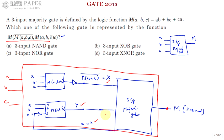We will evaluate x, y, and z for all possible combinations of a, b, c. Based on these three values, if at least two are ones the output will be one, since we have a three-input majority gate.